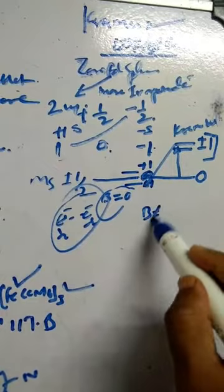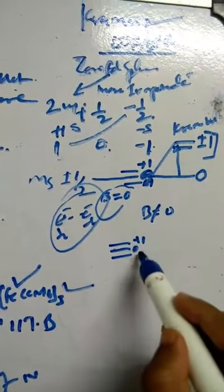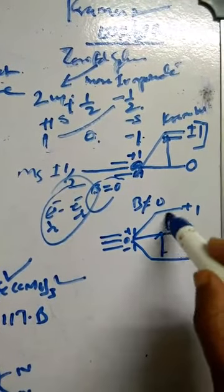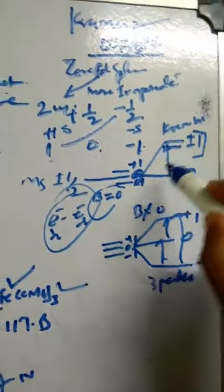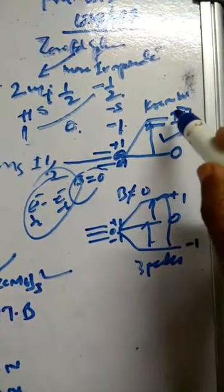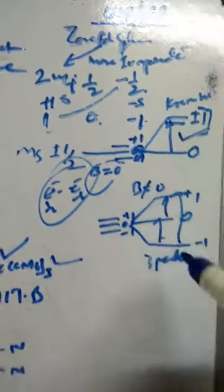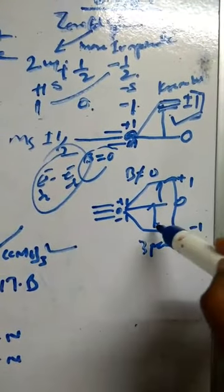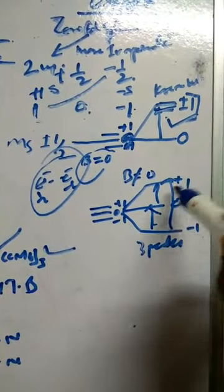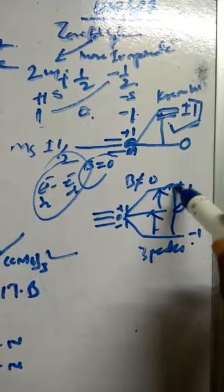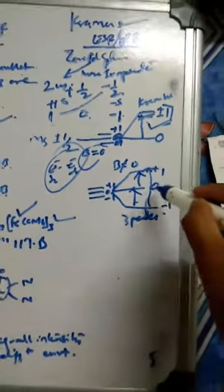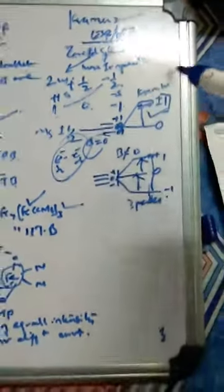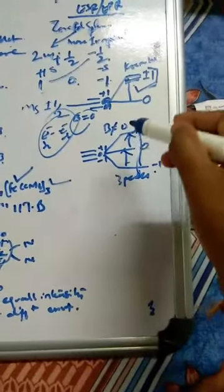When a magnetic field is applied, the ±1 levels that were degenerate further split — into zero, +1, and −1. You can get up to three peaks. The transitions −1→0 and 0→+1 are strong peaks by the spin selection rule, while −1→+1 is higher energy and typically unseen. So effectively two peaks are observed. This is the behavior in the presence of a magnetic field, compared to the Kramers' doublet or pair formed at zero field.